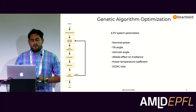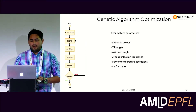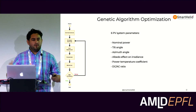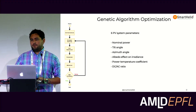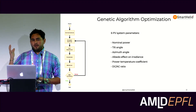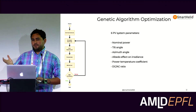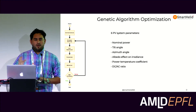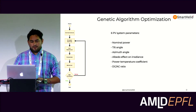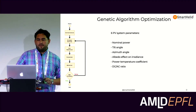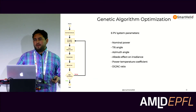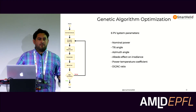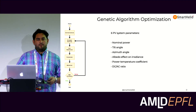Azimuth angle is the orientation of the plant. Albedo effect on irradiance is basically what you have in the surroundings — irradiance has two components, direct and diffuse, so high albedo means more diffuse irradiance gets reflected and absorbed by the panels. Then you have the temperature coefficient, which tells you how the panels behave in outdoor conditions at different temperatures. And finally, the AC ratio — how much of the energy produced we can actually extract.